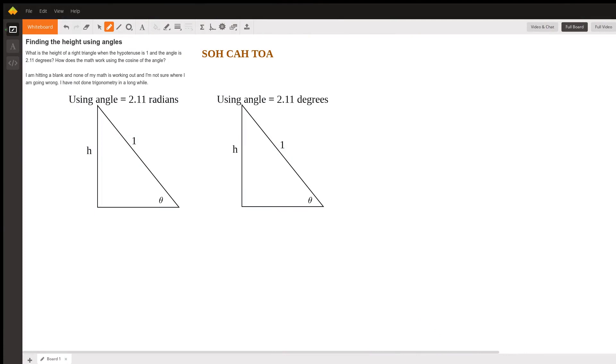We're going to try to find the height using angles. Now I am under the suspicion that 2.11 is actually radians and not degrees, but we'll do it both ways. Either way you go, you're not going to be using cosine.